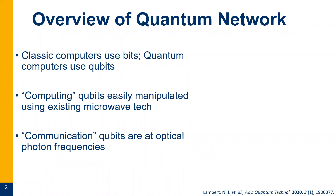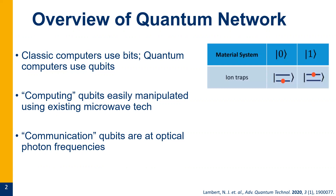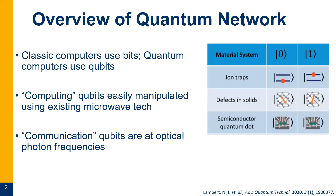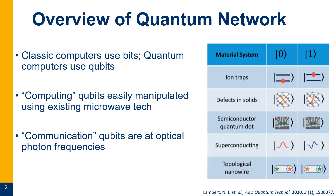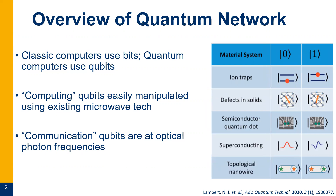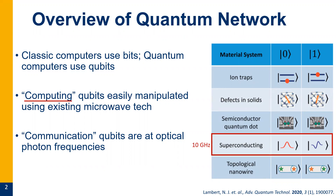I want to give a quick overview of what a quantum network is. Just as we think about our classical networks, quantum networks have quantum devices introduced. Just as classical computers use bits — ones and zeros — quantum computers use qubits. Those can be a number of physical things including ion traps, defects in solids, semiconductor quantum dots, superconducting qubits, and topological nanowires. Taking superconducting qubits as an example — I'll call them computing qubits — they operate at microwave frequency, around 10 gigahertz, and they're easily manipulated by existing microwave technologies. They're really great for carrying out heavy computations.